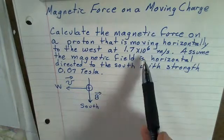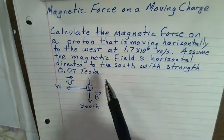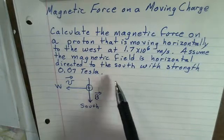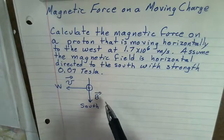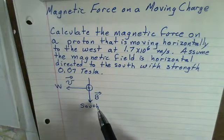Its speed is 1.7 times 10 to the 6 meters per second. We're going to assume the magnetic field is horizontal and the magnetic field is headed towards the south. The strength of the magnetic field is 0.07 teslas.